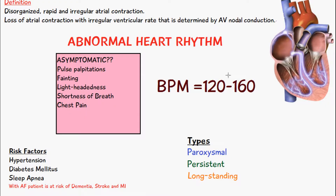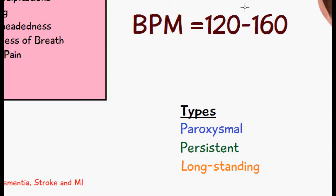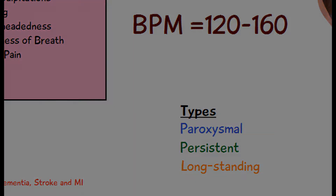Finally, the types of atrial fibrillation: paroxysmal, which involves very short-acting episodes that start and stop randomly; persistent atrial fibrillation, which has a longer duration lasting over seven days; and long-standing persistent or permanent atrial fibrillation, which occurs for more than a year at a time. A separate video will cover the treatment of atrial fibrillation.